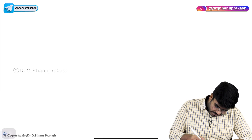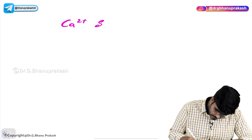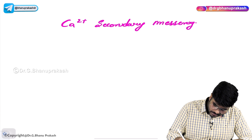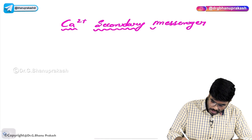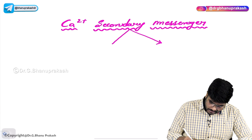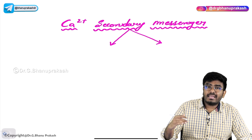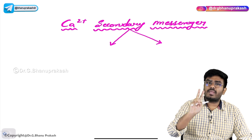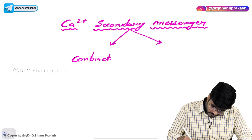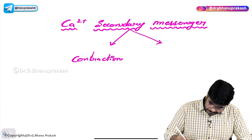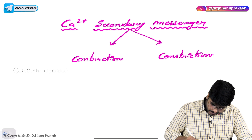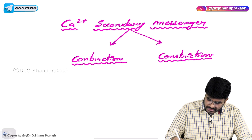Now let's continue with calcium as a secondary messenger. Which hormones are going to use calcium as a secondary messenger? Wherever you see calcium as a secondary messenger, the hormones using it are involved mainly in two types of physiological actions. First, calcium is involved in contraction — smooth muscle contraction — and constriction. So wherever you see calcium, it will cause contraction or constriction.